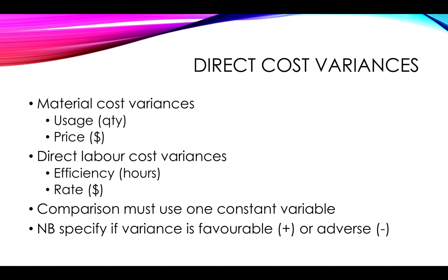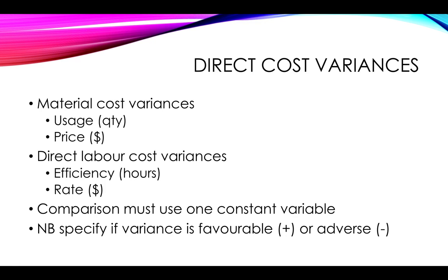It is also important that when calculating your variance, you specify whether it is favourable — meaning the budgeted cost was more than what it actually turned out to be, giving you a saving — or adverse, meaning the costs were higher than expected. Simply take your budgeted cost and subtract your actual cost: a positive answer indicates favourable, a negative answer indicates adverse. Keep these signs so that when you add sub-variances together, you can see whether the net effect was favourable or adverse.